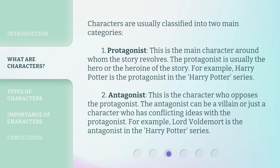2. Antagonist — this is the character who opposes the protagonist. The antagonist can be a villain or just a character who has conflicting ideas with the protagonist. For example, Lord Voldemort is the antagonist in the Harry Potter series.